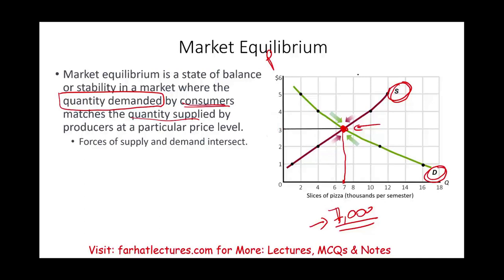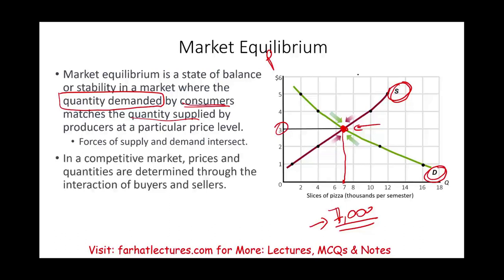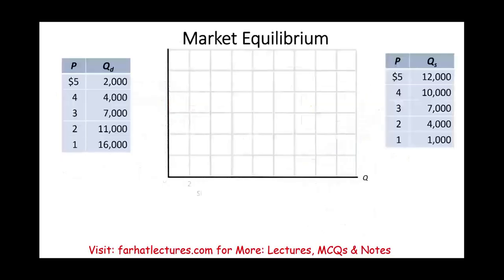If the price goes down to $2, we're going to have a shortage. If you only produce 7,000, we're going to have more demand because at $2 more people will buy. But at $3 we will sell everything. So on a competitive market, prices and quantities are determined through the interaction of buyers and sellers. This is the equilibrium for supply and demand.